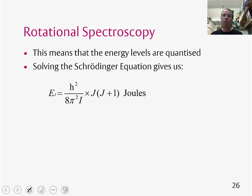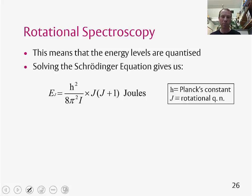When we solve the Schrödinger equation for a rotating system, it gives us this expression for the energy. In this expression, we have h, which is Planck's constant, and J, which is a rotational quantum number—the first of many quantum numbers we'll see in this course.